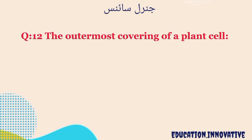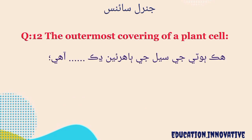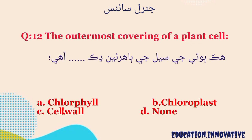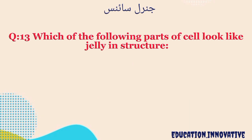Question number 12. The outermost covering of a plant cell — the correct answer is cell wall.